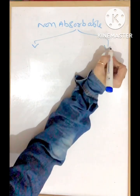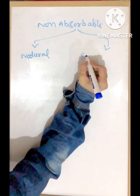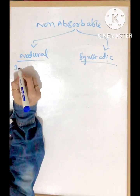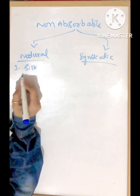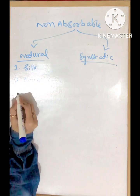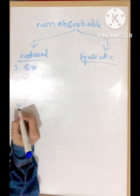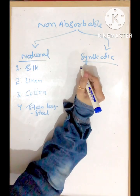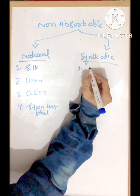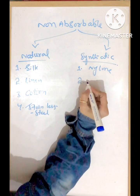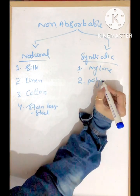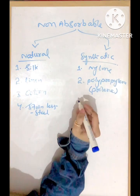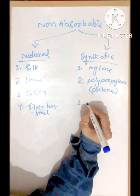Now comes the non-absorbable sutures, also divided into natural and synthetic. Natural non-absorbable sutures include: number one, silk; number two, linen; number three, cotton; number four, stainless steel. In synthetic: number one, nylon; number two, polypropylene, which is commonly known as Prolene, used in the skin; number three, polyester.